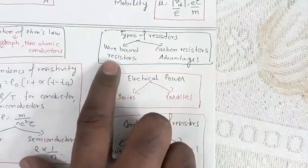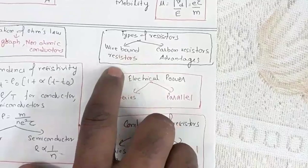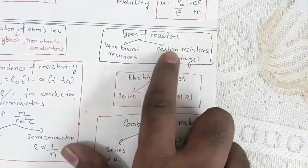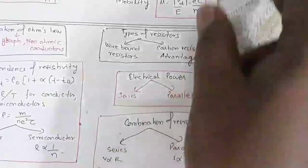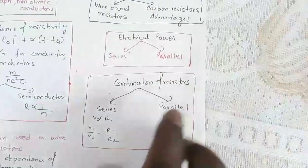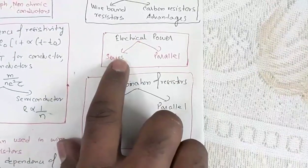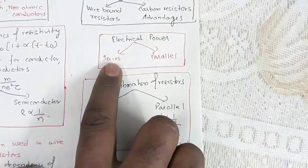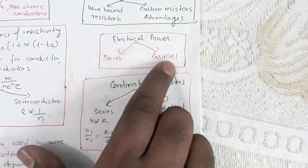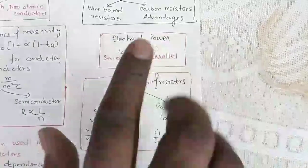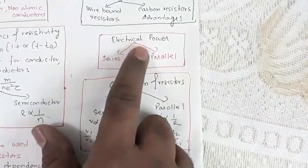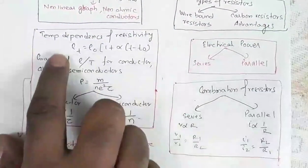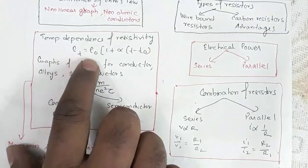Next are the types of resistors — questions can be asked on this. There are two kinds: wire-bound resistors and carbon resistors. You must go through the advantages of carbon resistors as given in your NCERT textbook. Then comes electrical power: in series and parallel combinations, the expressions are analogous to those for capacitance — equivalent resistance in series and parallel.